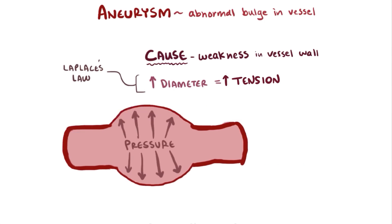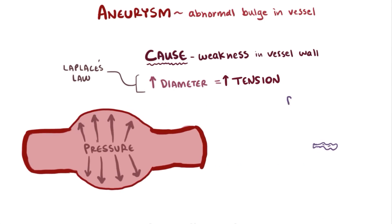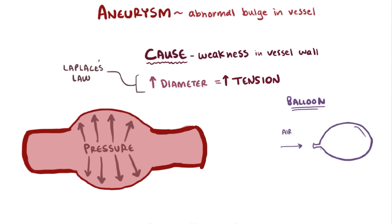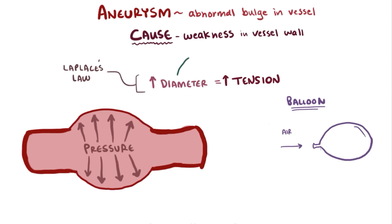You've likely experienced this when you blow up a balloon. The first breath into the balloon is tough, but the next several breaths are pretty easy. This is why aneurysms usually get bigger over time — it's because of this positive feedback loop.